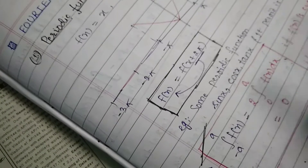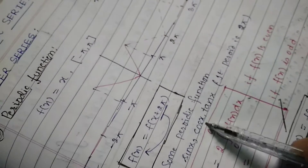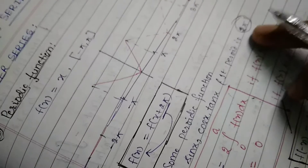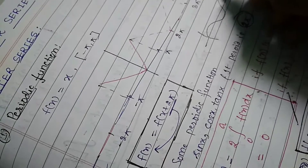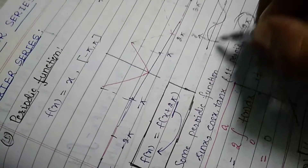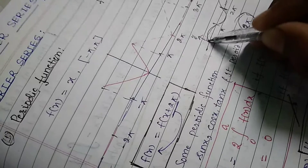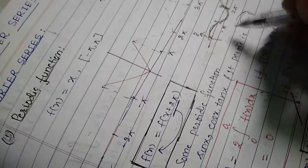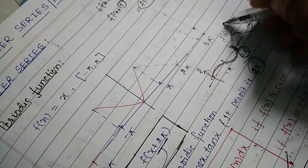More examples: sin x, cos x, tan x are periodic functions with period 2π. Looking at the graph of sin x, after 2π the function repeats the same value, so 2π is the period of f(x) = sin x.